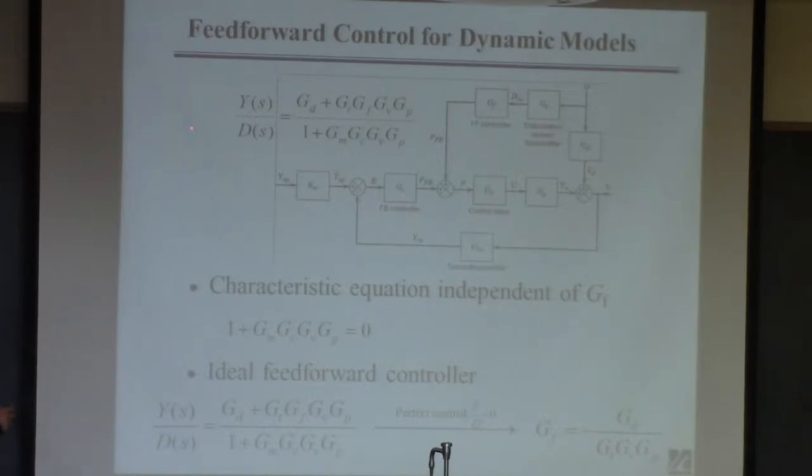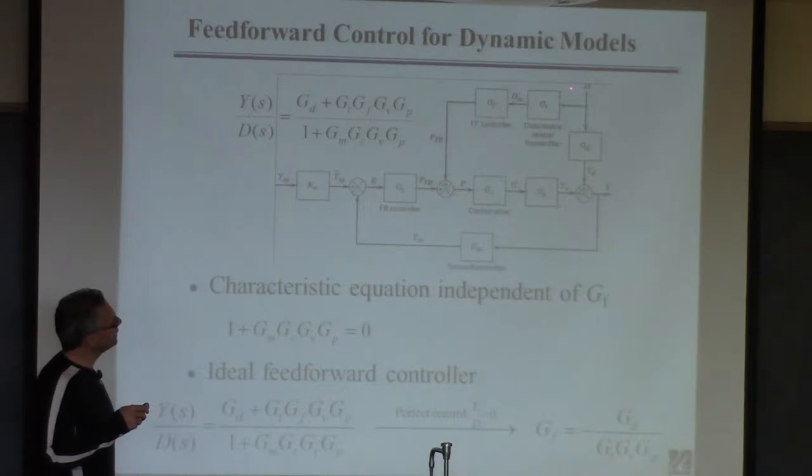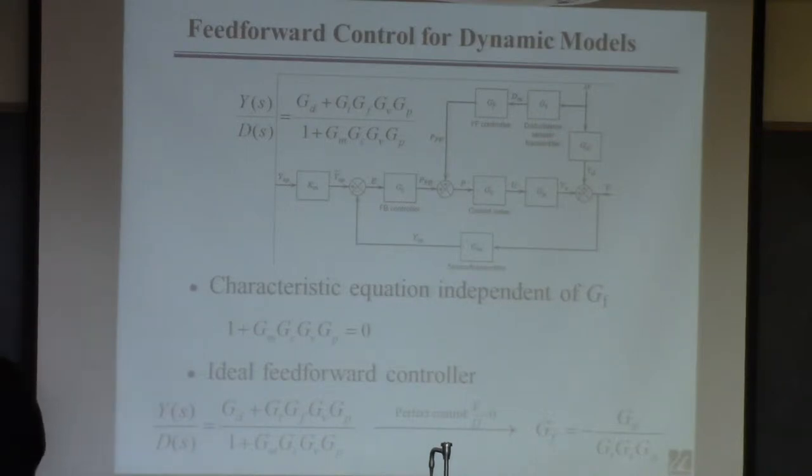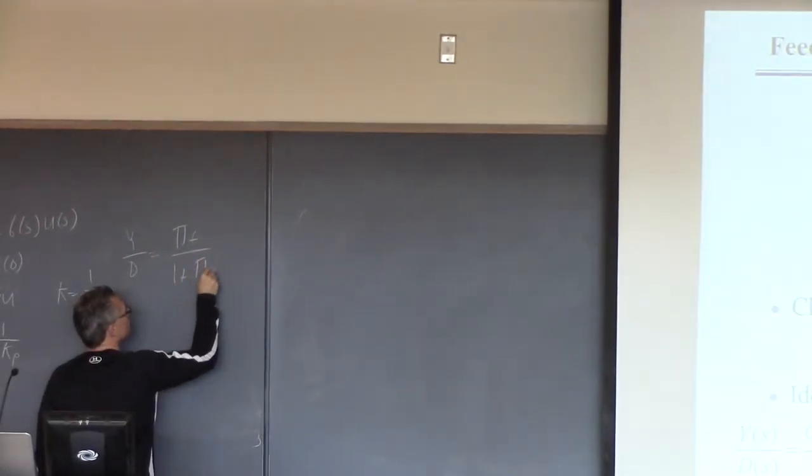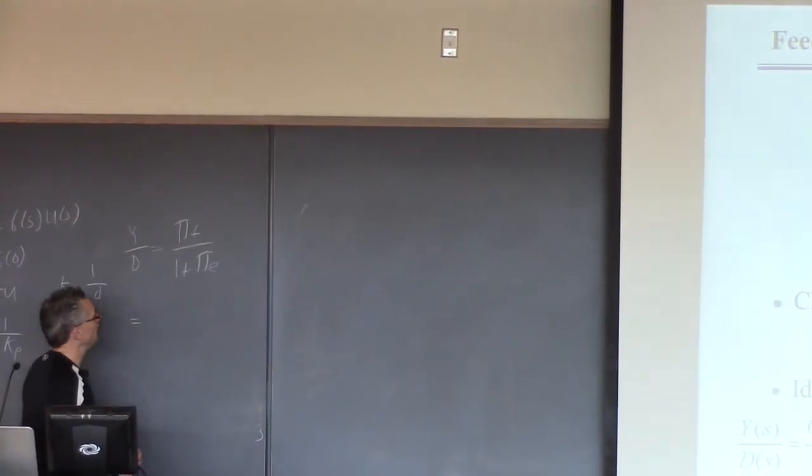All right. So I need to do a model-based design. As usual, I want a closed-loop transfer function. And because I'm interested in designing this controller, I want the closed-loop transfer function between the disturbance and the output. So I've written it up there. And it's the usual formula that we use. This is the formula I'm using. Pi f over 1 plus pi e. So pi f is the feedforward path between d and y. And this is 1 plus everything in the feedback loop.